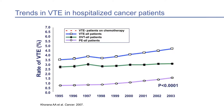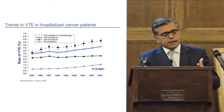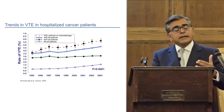These are rather old data from the United States, but they represent an important trend: there has been an increase over time in the reported frequency of thromboembolic complications in cancer patients in hospital. The question one has to ask is why is that?